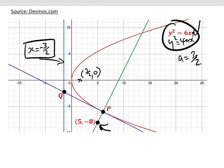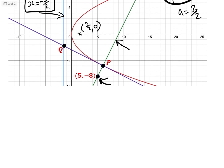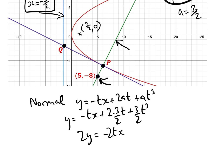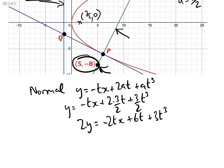Now we can work out the equation of the normal using the formula we derived: y = −tx + 2at + at³. Substituting a = 3/2 gives y = −tx + 2(3/2)t + (3/2)t³, which simplifies to 2y = −2tx + 6t + 3t³.